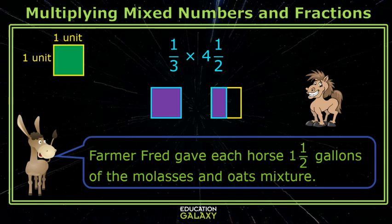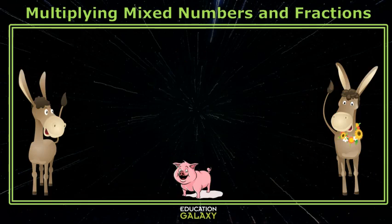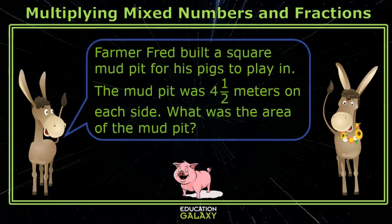So Farmer Fred gave each horse one and a half gallons of the mixture. That's awesome, Melvin. Okay, Maisie, I have one for you. Farmer Fred built a square mud pit for his pigs to play in. The mud pit was four and a half meters on each side. What was the area of the mud pit?